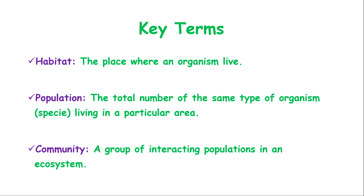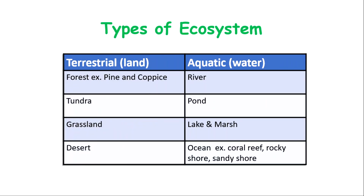Community is another important term. A community is the interaction of different populations. For example, dogs interacting with cats, or human beings interacting with dogs. Once all these living organisms or populations come together, we form a community. So a community is more than one population interacting.